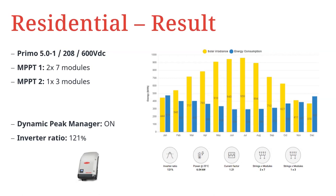The Fronius Solar Creator tool can deliver interesting graphs and data about planned arrays. I use the Creator tool to calculate the string configuration, module count, and if rapid shutdown is necessary, and much more. We can even get a prediction on solar energy production through the year if the customer's energy usage is known. In this example we did manage to oversize the inverter by about 120%, and our customer is going to be really happy with the power gain from this.